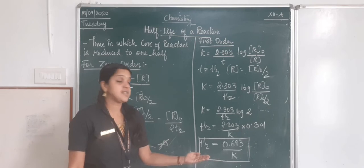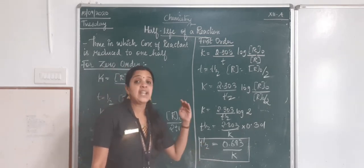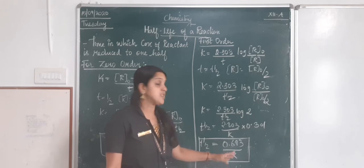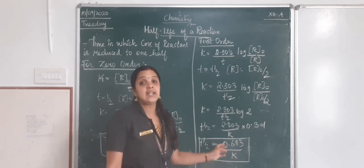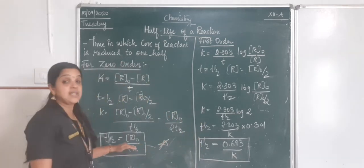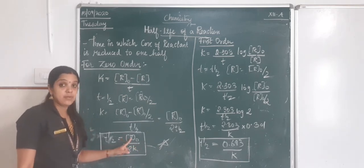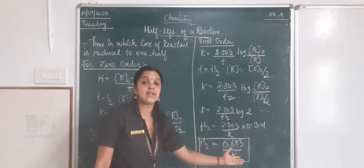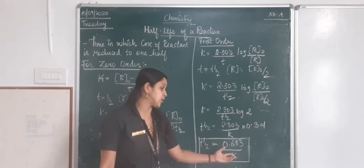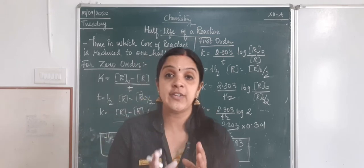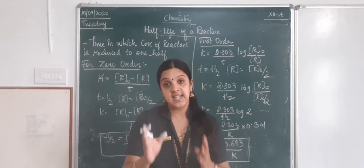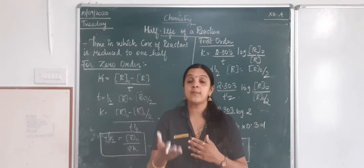The half-life period for a first-order reaction is independent of the concentration of the reactant — it is only related to the rate constant. It is a constant value: t½ = 0.693/k. Unlike zero-order reactions where t½ depends on R₀, here there is no role for reactant concentration. Problems will be solved in a separate video.